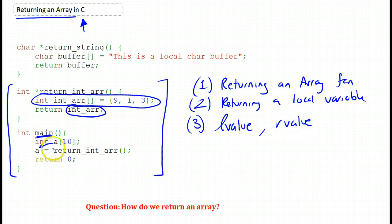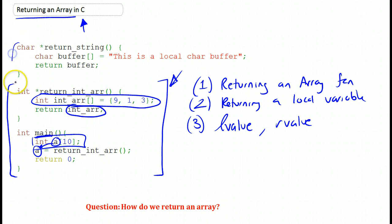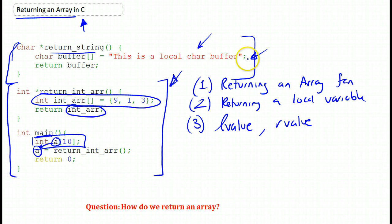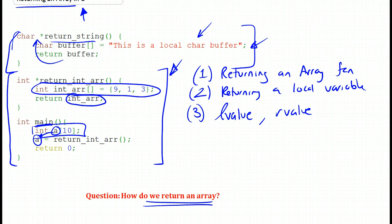All you need to know is that you cannot assign anything to arrays — you can't modify the array once you declare it. The third problem is that we're trying to assign something to an array in the main function, and this you cannot do in C because arrays are not modifiable L values. If you're interested, you could look into what L values and R values are in C and C++. So these are the three mistakes, making this an incorrect approach — you won't be able to compile this code. We're going to look at six possible solutions, and we'll identify the best one at the end.